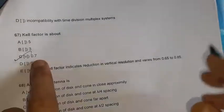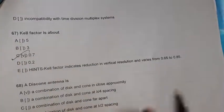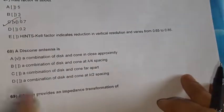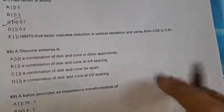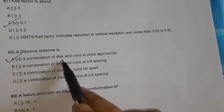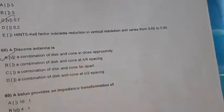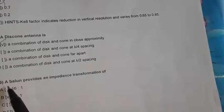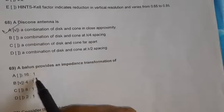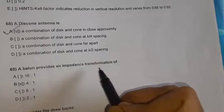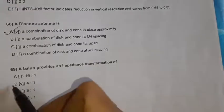Question 68: A discone antenna is known as a combination of disc and cone in close proximity — that is the right option. Question 69: A balun provides an impedance transformation of 4 is to 1.